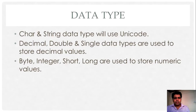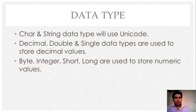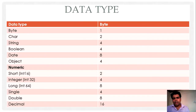Let's understand a few important concepts. The character and string data types use Unicode formatting. The decimal, double, and single data types are used to store decimal values, while byte, integer, short, and long are used to store numeric values. These are the categorizations of data types discussed.